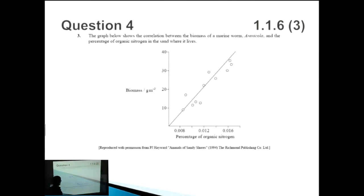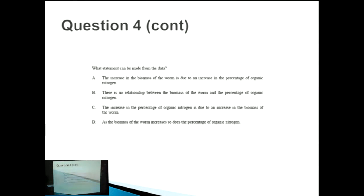The graph below shows the correlation between the biomass of a marine worm and the percentage of organic nitrogen in the sand where it lives. As you can see, as the nitrogen tends to go up, you tend to get a heavier worm. I'm not sure why that is. What statement can be made from the data? Now, this is one of those questions which can trick a lot of people. But in fact, it's best to kind of sit on the fence.